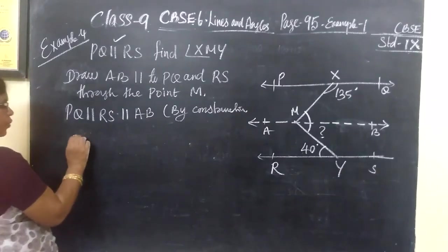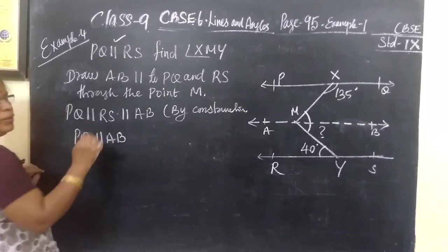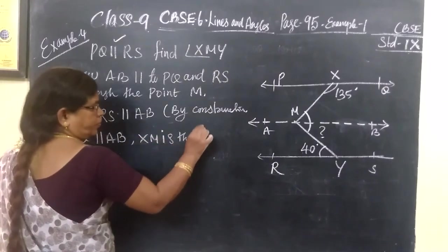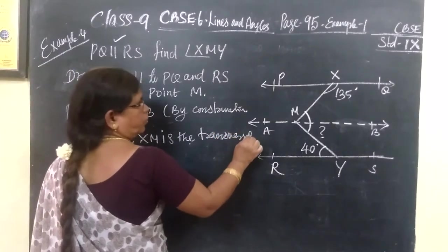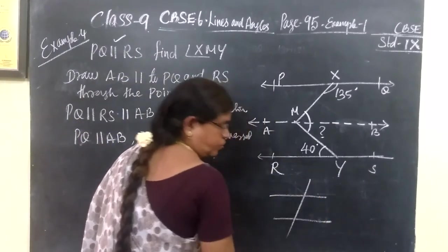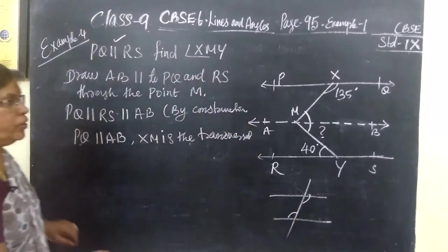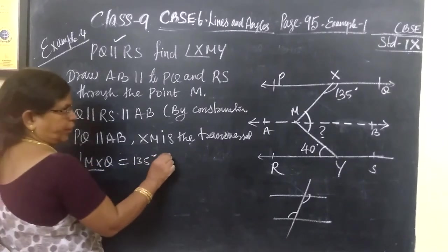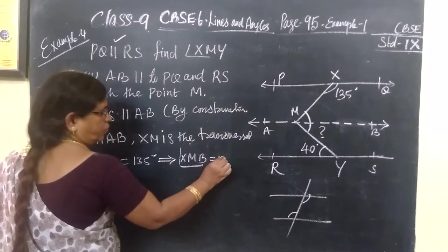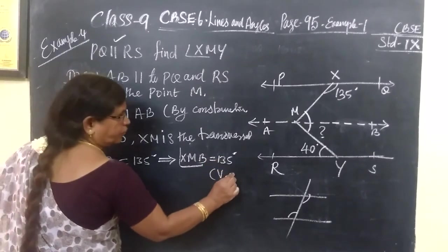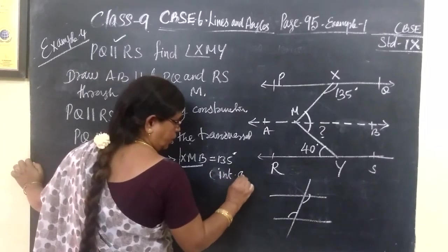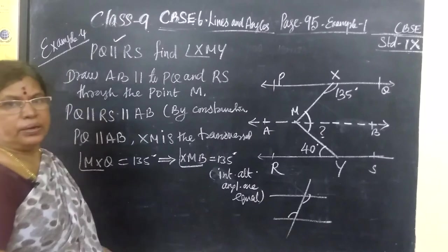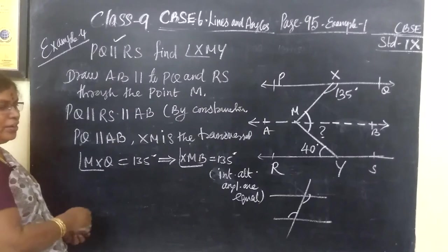Now consider P, Q and A, B. P, Q parallel to A, B. Which is the transversal? X, M is the transversal. So if a pair of straight lines and if a transversal is given, you know alternate angles are equal. Therefore, angle MXQ equal to 135 implies angle SMB also 135. What is the reason? Interior alternate angles are equal.